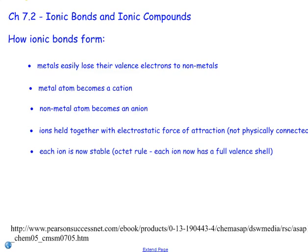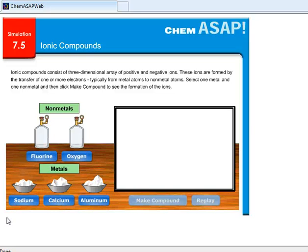Each ion is now stable. This is the octet rule, which we talked about in the previous lesson. Each ion now has a full valence shell of eight valence electrons. This website is a simulation of reacting different metals together with different non-metals to see what is happening on the atomic level.